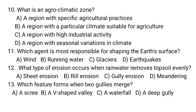Agro-climatic zones are classified by climate, not by agricultural practices. An agro-climatic zone is a region with a particular climate suitable for agriculture — B is the correct answer. Industrial activities are not connected with agro-climatic zones. Agro-climatic zones are defined by long-term climatic conditions, not seasonal variation, so D is also incorrect.